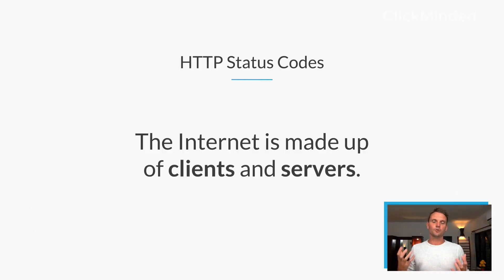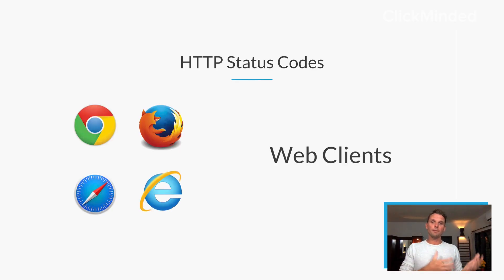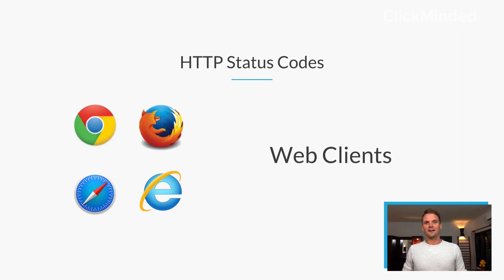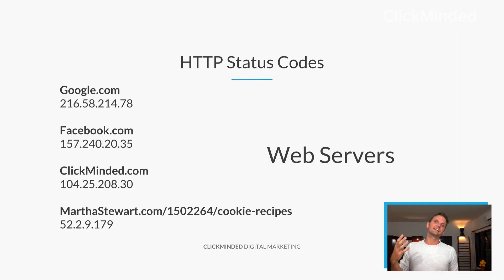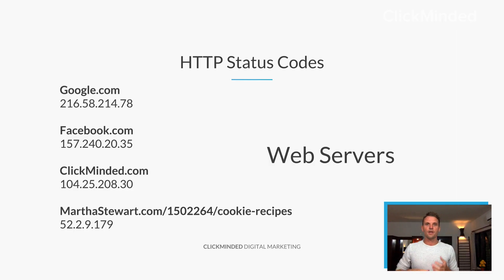The internet is made up really of two core things: clients and servers. You have clients — web clients — that's your browser. Maybe it's Chrome, maybe it's Firefox, maybe it's Safari, or maybe it's Internet Explorer. You're usually accessing the internet through one of these clients. Whenever you request a website, you're making a request from a web server. You make a request and the server responds — that's happening every single time you're clicking a link.